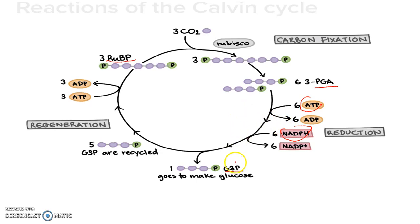So this G3P can be assembled into glucose, or it can be recycled back to become RUBP. If G3P goes to make glucose, which is our ultimate goal for photosynthesis, the rest of the G3P is recycled to become RUBP, and that's why it's called the Calvin cycle.